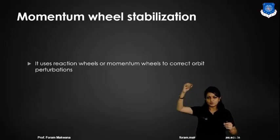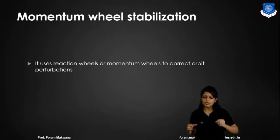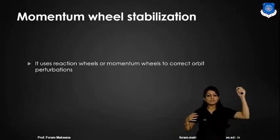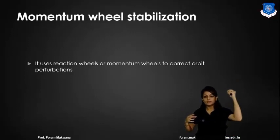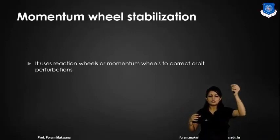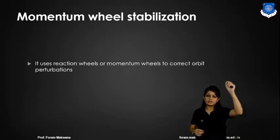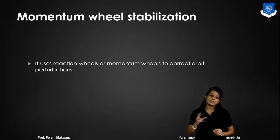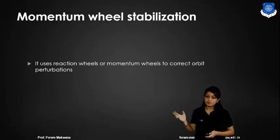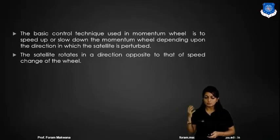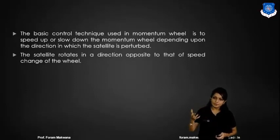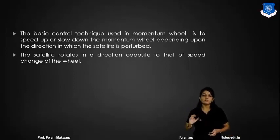There is a gravitational force at different instants of time and at different points. As the satellite moves around the earth from the starting point, after one complete rotation, it will not return to the starting point. This is called orbital perturbation. To correct this, it uses reaction wheels or momentum wheels. The basic control technique is to speed up or slow down the momentum wheel depending on which direction the satellite has drifted.